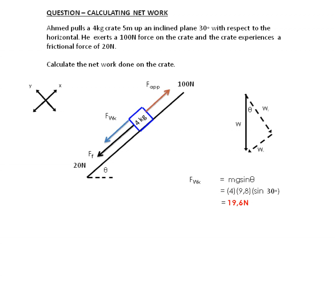So we can use 19.6 newtons as the force of gravity parallel to the slope. If we put it on our diagram, that will be F_wx — the parallel component of our weight — which is 19.6 newtons. Now we need to work out the net force parallel to the plane.